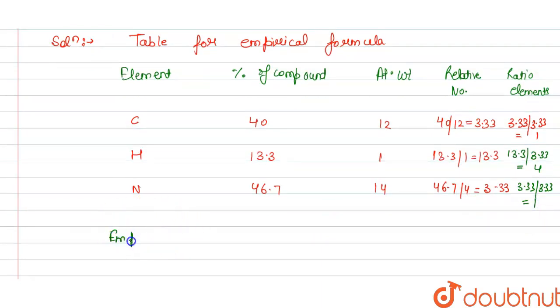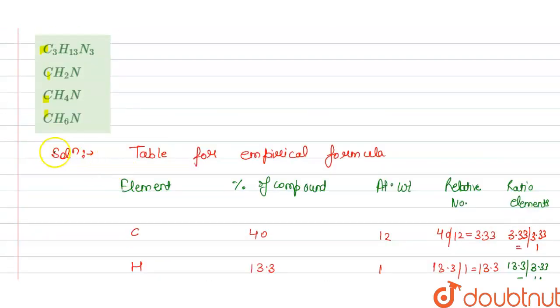So from this we get empirical formula. Carbon ratio element is 1, so this is C1H4N1, so we can write this as CH4N, and this is the answer for this question. Now we check which option is correct here, so our option C is correct. Thank you.